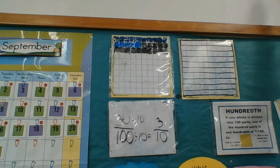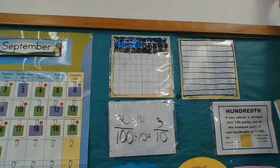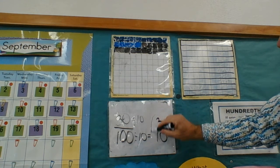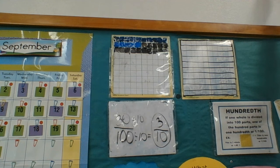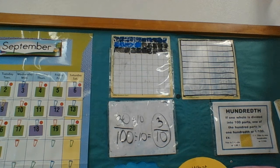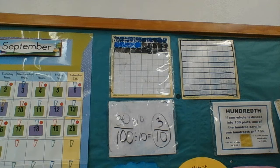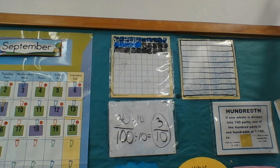And so that's why when I wrote up here, 3 tenths, is because I knew I could already, once there was a zero, any zeros after the number in the place value, it's not necessary.